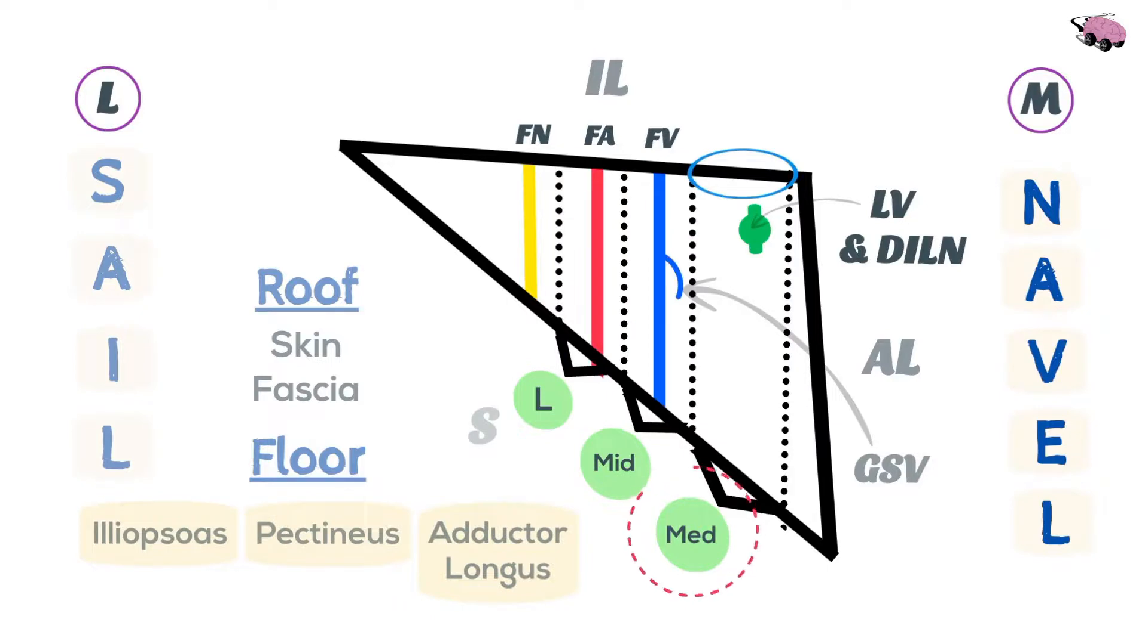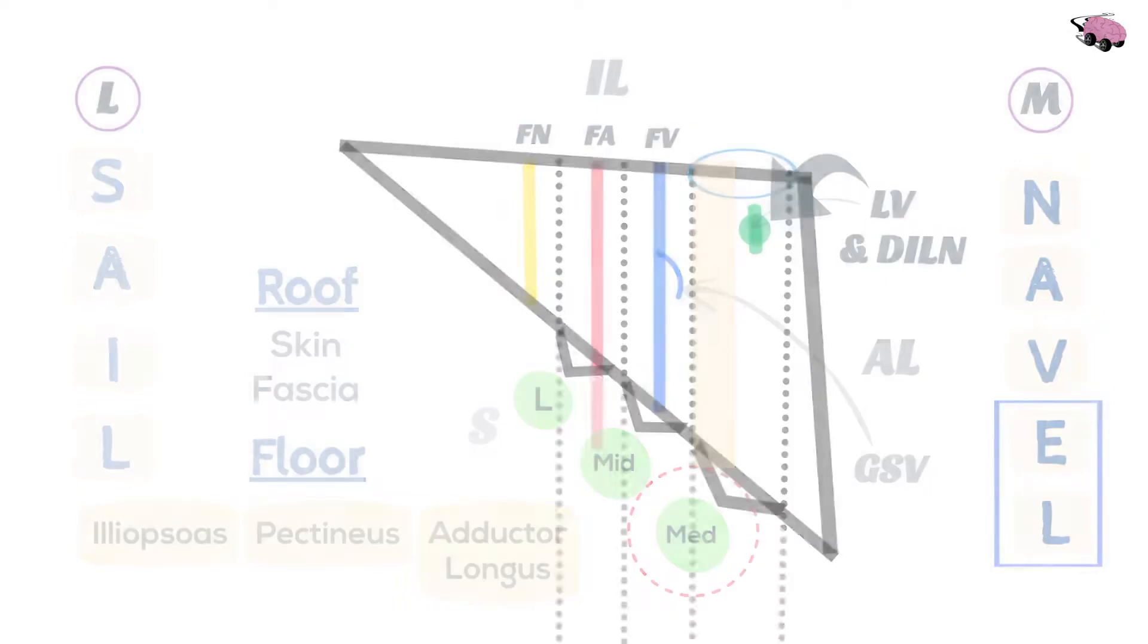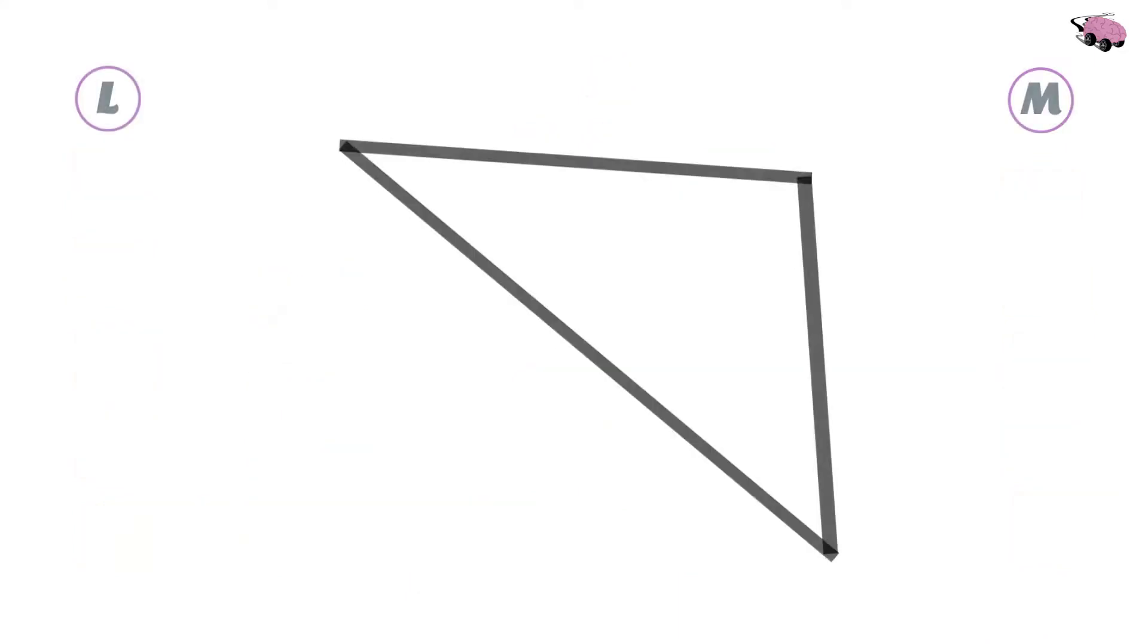And the most medial compartment of the femoral sheath, called the femoral canal, covers the E and L parts which contains the empty space, lymph nodes, and the deep inguinal lymph nodes. You've done it! You have drawn the structure, the contents, and the important divisions and landmarks.